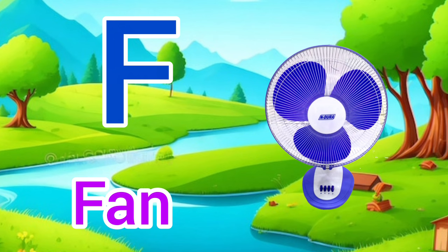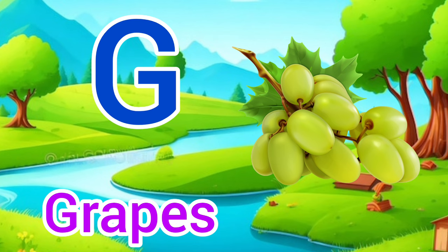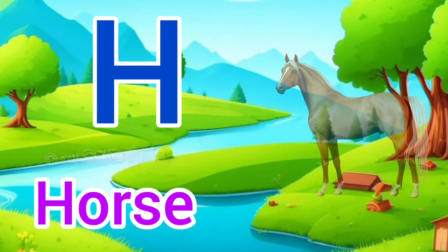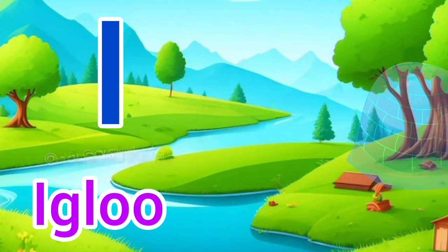G for grapes, grapes means anggur. H for horse, horse means ghoda. I for igloo, igloo means igloo.